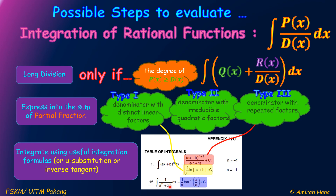Formula number 15 is the integration of 1 over (a² + x²) dx, where a is a constant, which equals 1 over a times inverse tangent of x over a, plus C. This formula is suitable for type 2, which is the denominator with an irreducible quadratic factor.